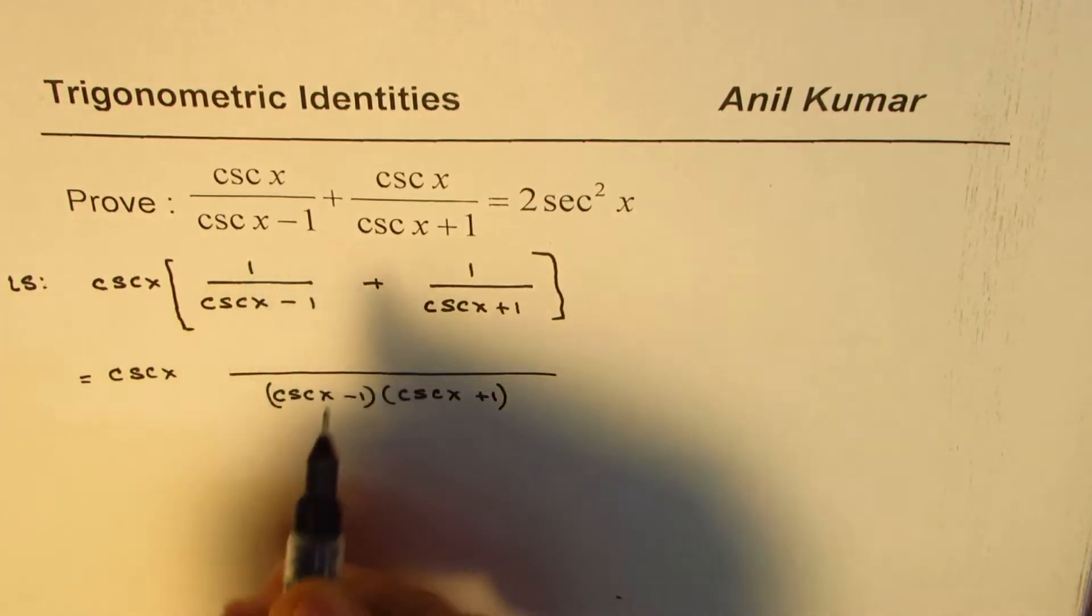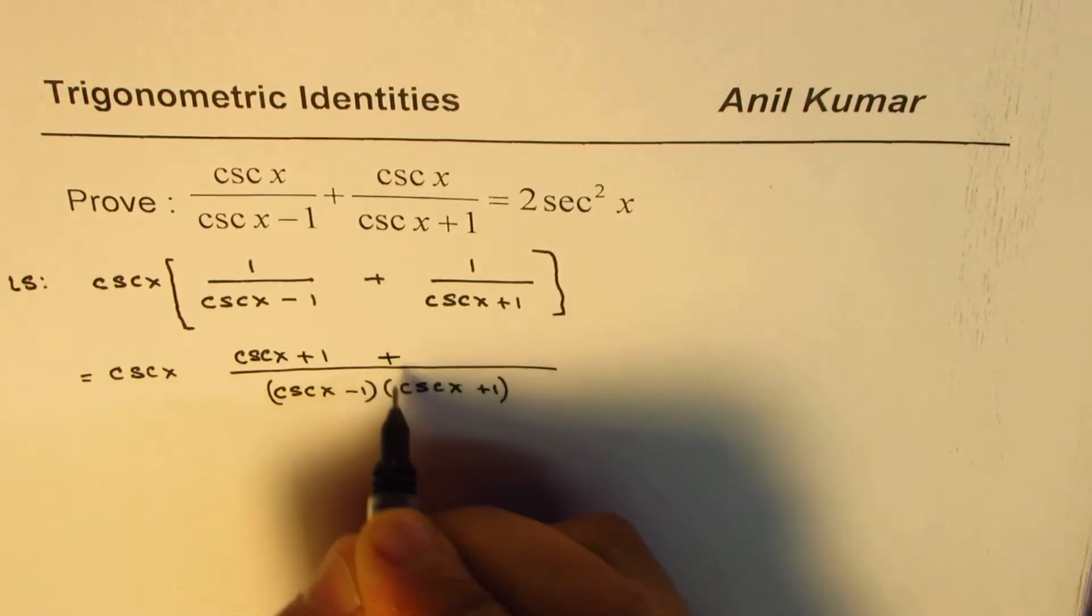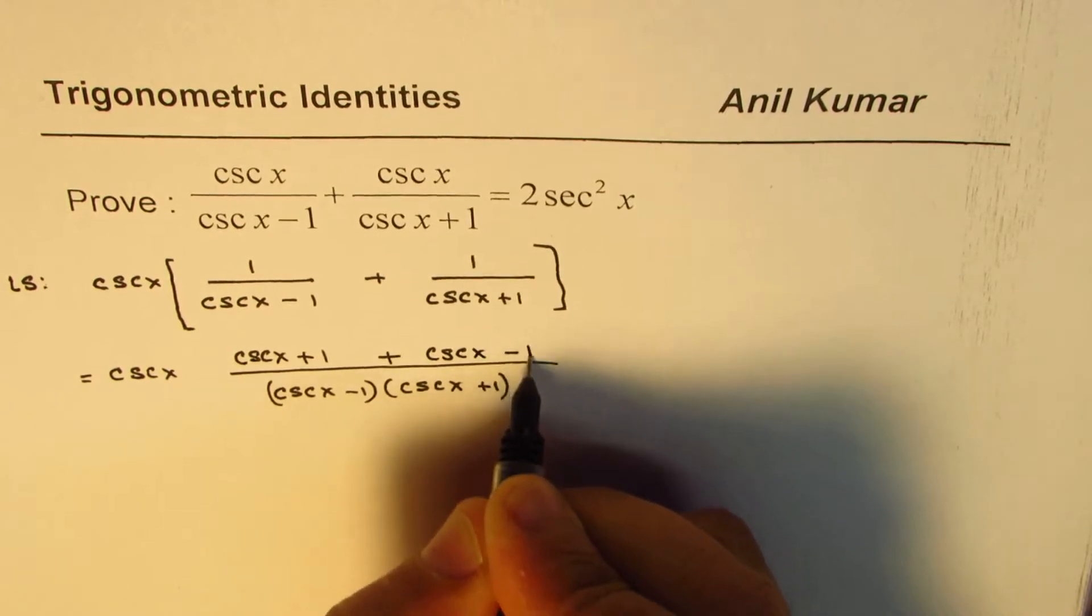Now, that gets cross-multiplied. So, we have cosecant x plus 1 plus cosecant x minus 1.